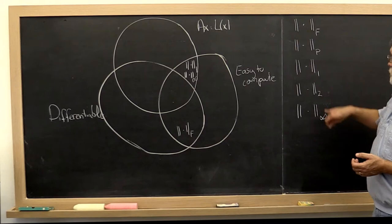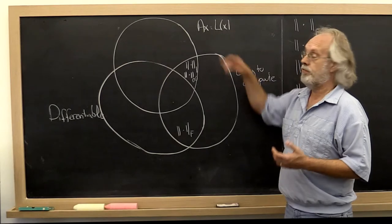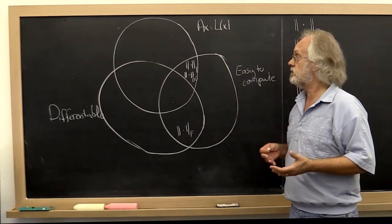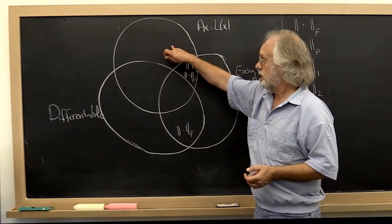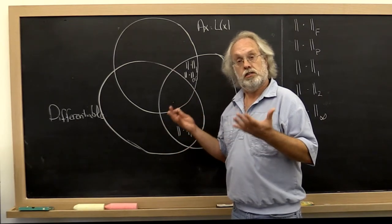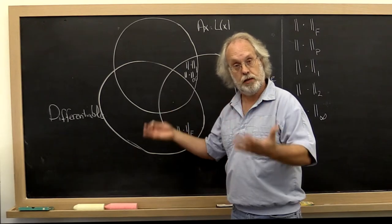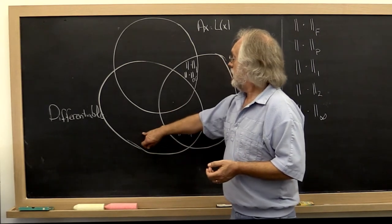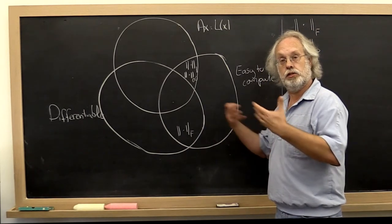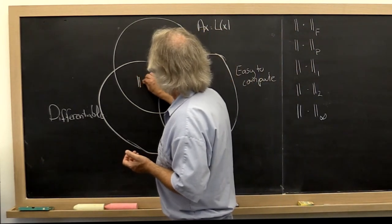And then we get to the 2-norm, which again also can be used to evaluate the magnitude of a linear transformation because it measures by how much it stretches. So it belongs here. It is also differentiable because of the square root of the sum of the squares that comes into the picture. But it's not easy to compute. We don't fully realize that until future weeks. So it actually belongs right here.